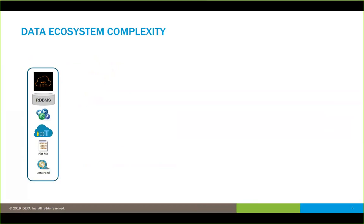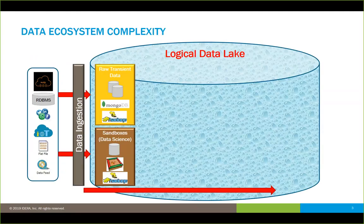I talked about data ecosystem complexity. When we look at a lot of organizations, we see many different types of things happening. We're trying to ingest a lot more types of data now than we were before — everything from raw data from internet sensors, IoT sensors, social media feeds, flat files, other data feeds, in addition to the typical relational structures. And of course, a lot of us are now utilizing NoSQL data structures in our organizations as well. We're actually trying to take information from both inside and outside the organization at any given point in time.